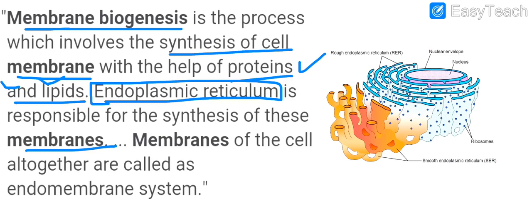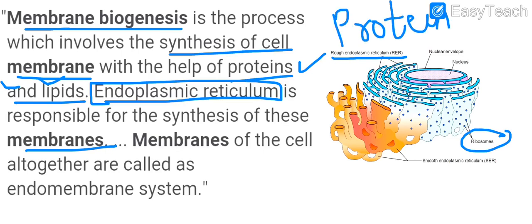Membranes of the cell altogether are called the endomembrane system. The rough endoplasmic reticulum, because of the presence of ribosomes, produces proteins, whereas the smooth endoplasmic reticulum, which has no ribosomes, produces lipids. So membrane biogenesis is the process which involves the synthesis of the cell membrane with the help of proteins and lipids, which are produced by the endoplasmic reticulum.